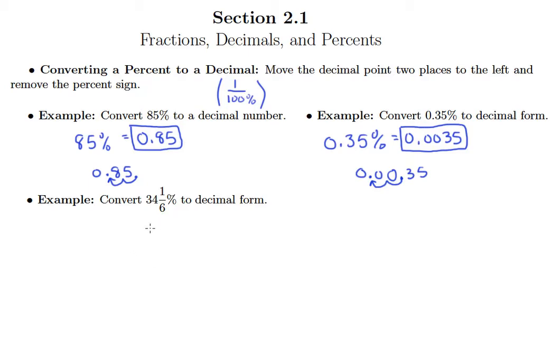This last example is a little more tricky. We want to convert it into decimal form, and there's a few ways that you could go about doing this problem, but my suggestion here is let's just take this number, 34 and one-sixth, and let's write it as a decimal.